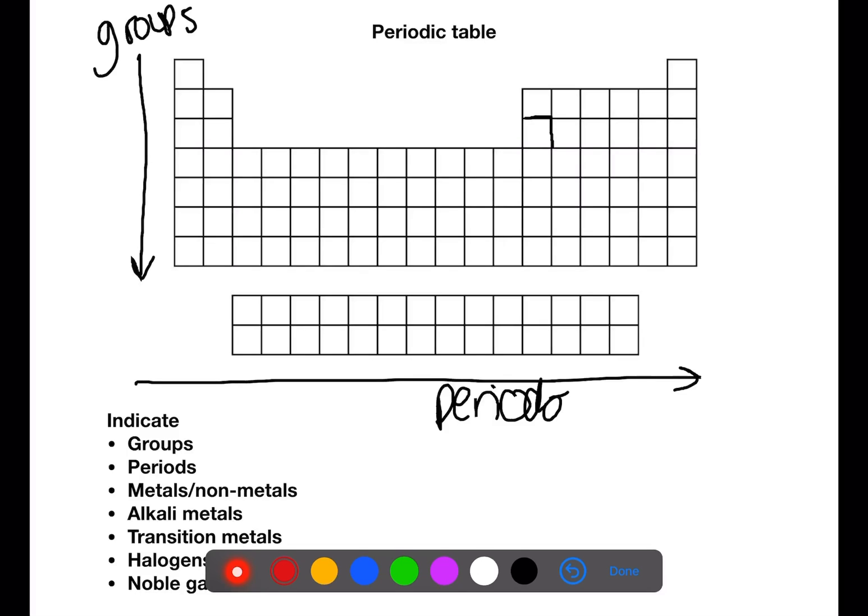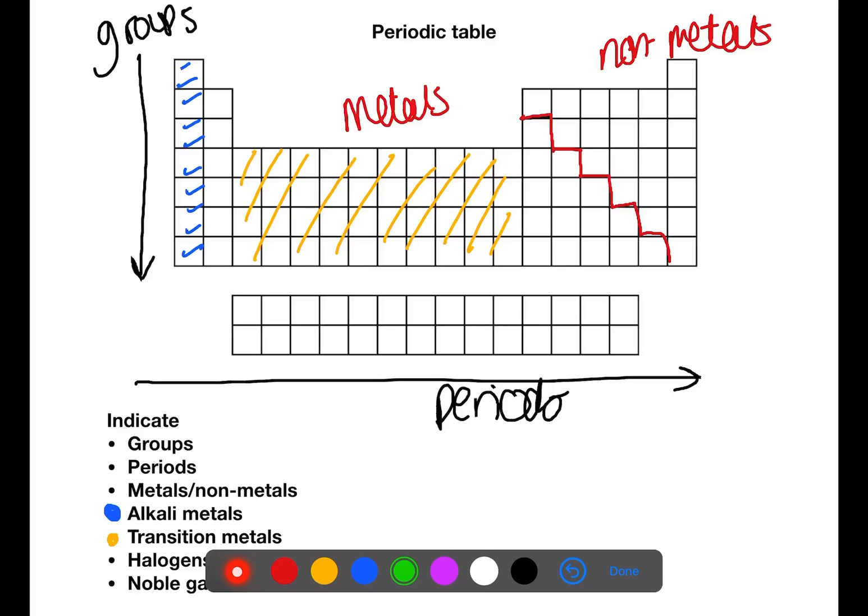There is a step line here in the periodic table which splits the metals on the left and the non-metals on the right. There are four different parts of the periodic table that you're expected to know. Group number one is the alkali metals. The transition metals are this section here in the middle. The halogens are group number seven. And then finally the noble gases are group eight or group zero.